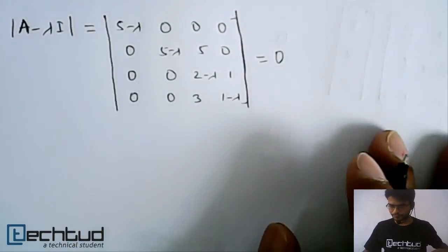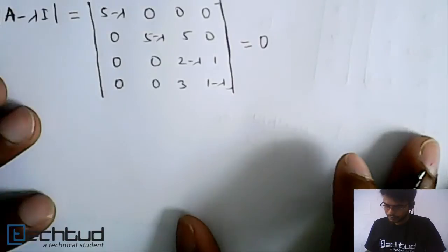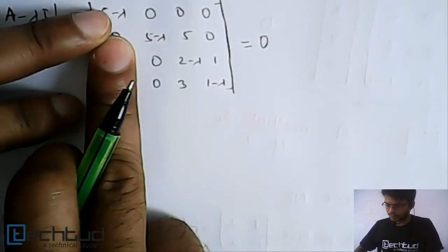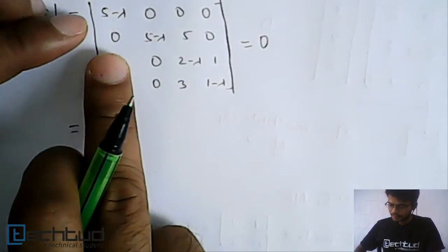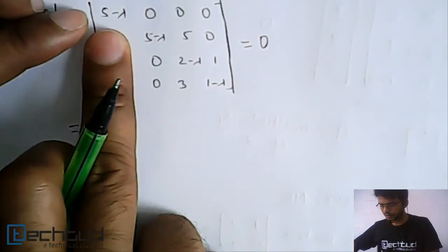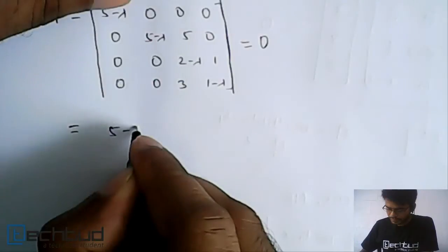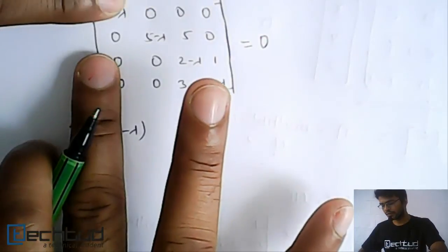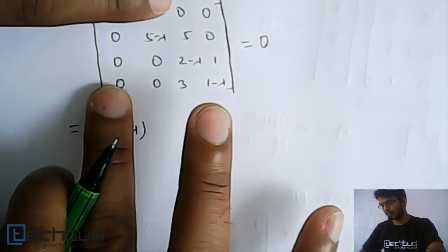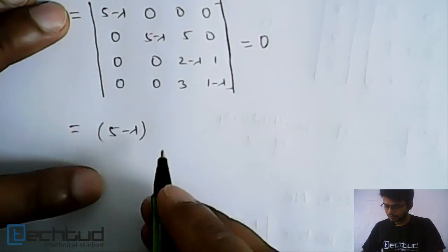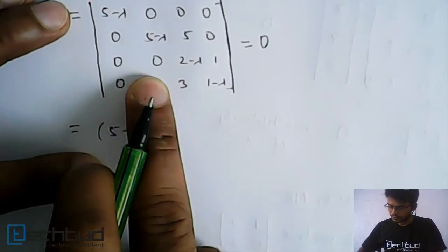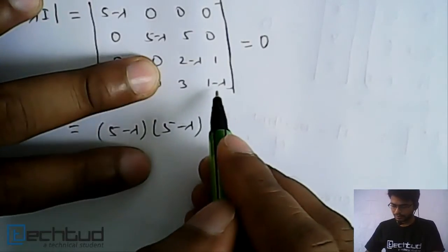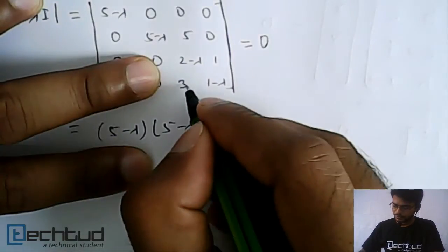When we solve this determinant equal to 0, we can directly see that the entire first column except the first element is 0. So we only need 5 minus lambda multiplied by this 3×3 determinant. Here again, two values are 0, so we solve for 5 minus lambda only. So again 5 minus lambda, and here 2 minus lambda into 1 minus lambda, minus 3.